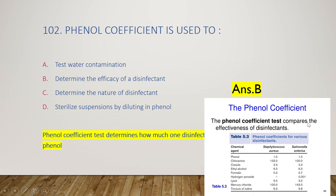The phenol coefficient test compares the effectiveness of test disinfectants against phenol as the standard, using test organisms Staphylococcus aureus and Salmonella enterica. The phenol coefficient of phenol itself is one, but another disinfectant like chloramine has a phenol coefficient value of 133, meaning chloramine is 133 times more effective than phenol.